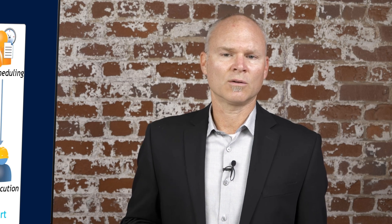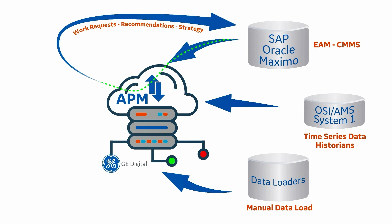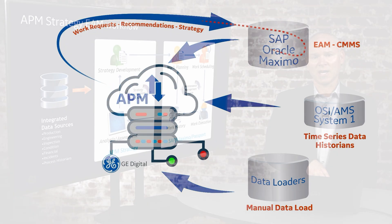In some cases that execution system is an EAM; in other cases it's APM itself for things like operator rounds or monitoring via Smart Signal. And as those maintenance plans get executed, the work order history comes back into APM to help us understand how effective that strategy is over time.